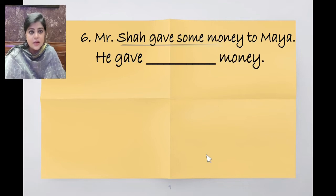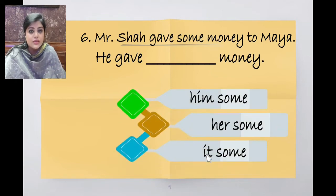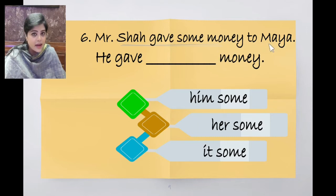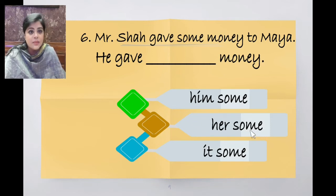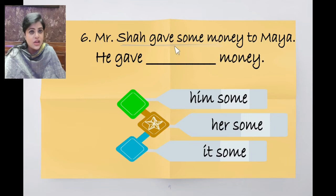Mr. Shah gave some money to Maya. He gave dash money. We are talking about an indirect object. Mr. Shah gave some money to Maya — whom did he give the money to? To Maya. Maya becomes her. He gave her some money. The correct answer is her some.